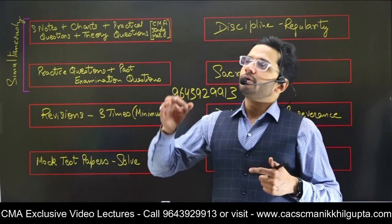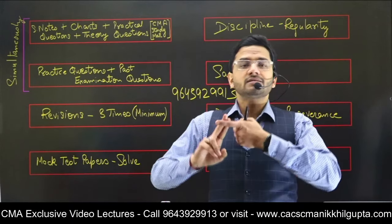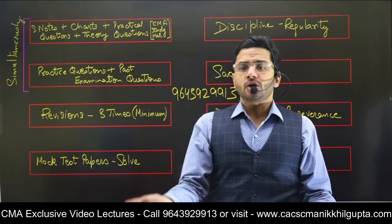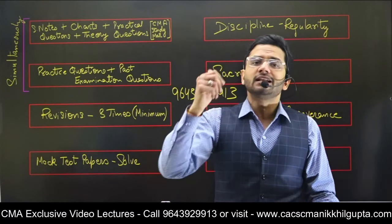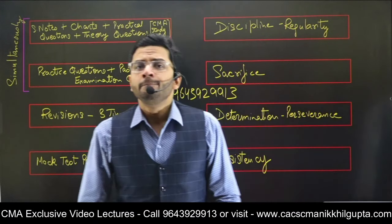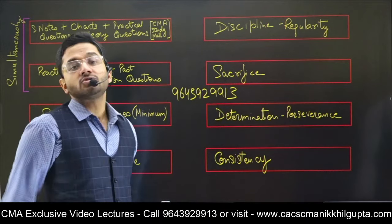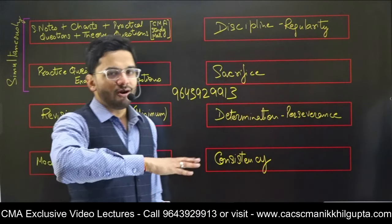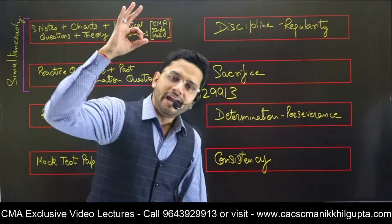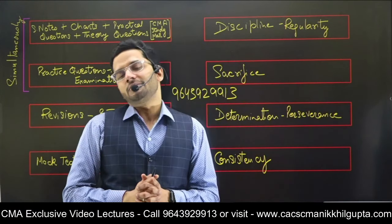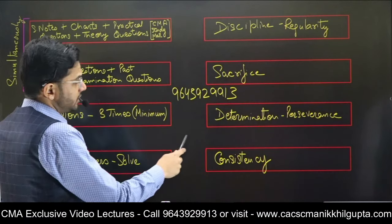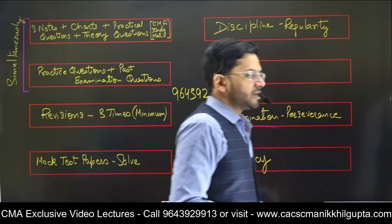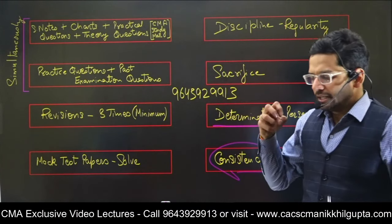There are certain chapters from which questions mandatorily come — for example, Residential Status and House Property. Do them for sure, even if they're B category, because a question will definitely be sitting in the examination from these chapters. No compromise. Very smart working is required at this point — this is CMA Final, not foundation or intermediate. Smart thinking is required. Consistency is one thing which is required — you have to be consistent and focused.